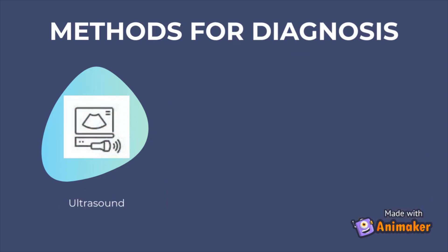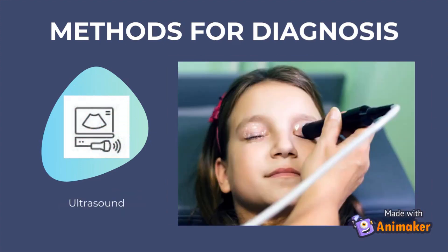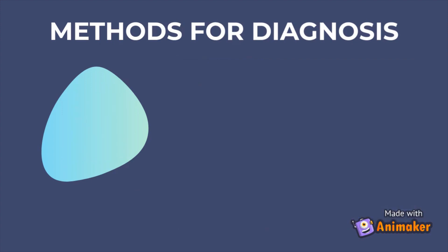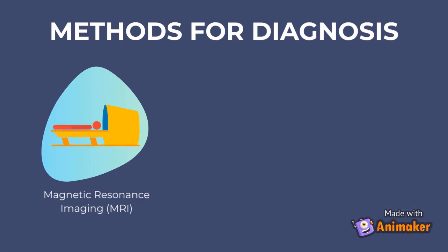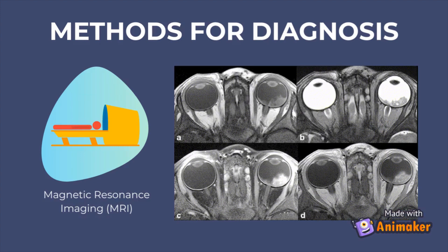Another procedure includes an eye ultrasound, which is used to find the location of the tumor in the eye. It is conducted with a wand-like structure that uses sound waves to take images inside the eye. An MRI can also be used, utilizing radiofrequency waves to determine the size and number of tumors in the eye, and to investigate the severity of the spread of cancer from the eye to other parts of the body.